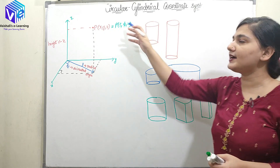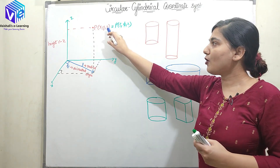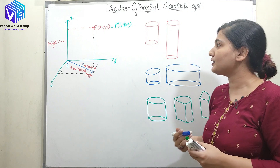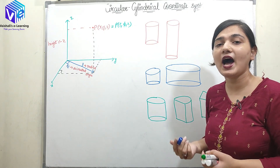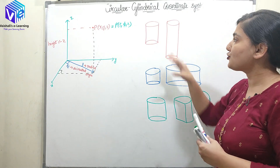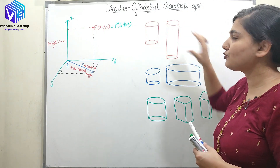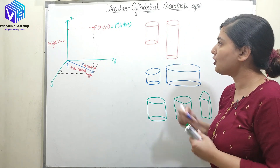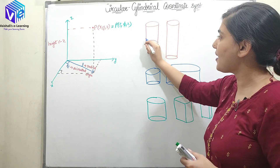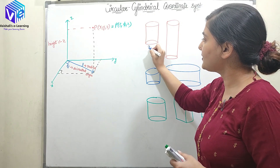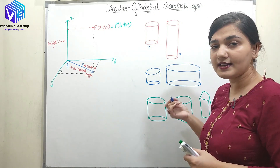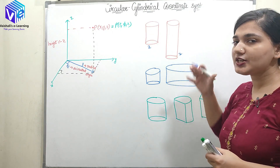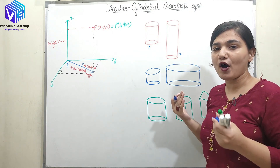First, z. Z was already there in the Cartesian coordinate system. Z denotes the height of the cylindrical object. So here we have two cylindrical objects, both differing in height — one has less z and the other has more z. So they are differentiated based upon height.